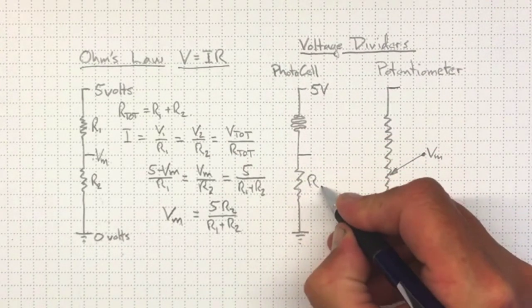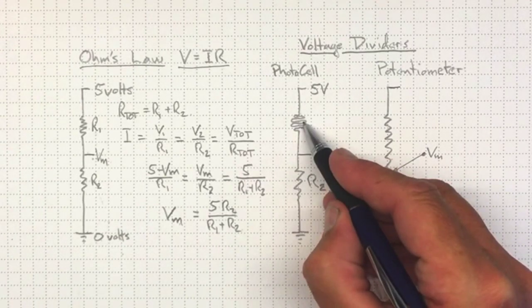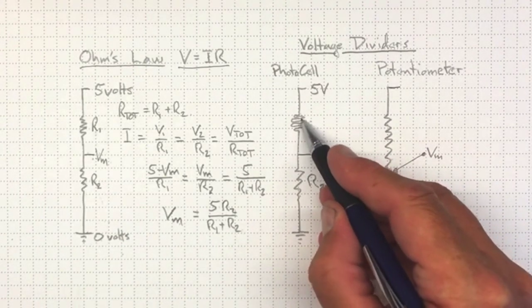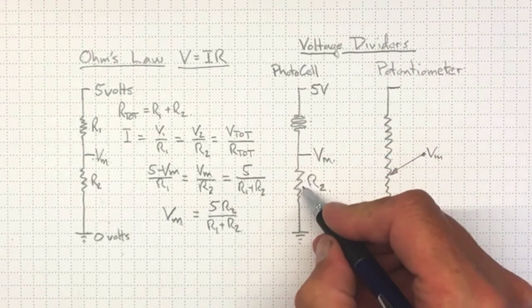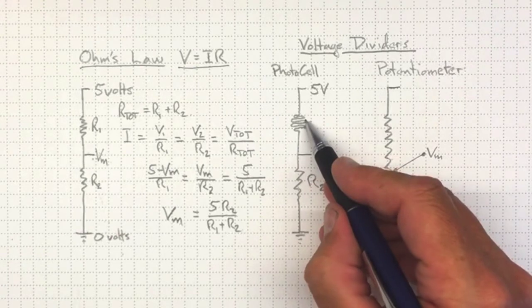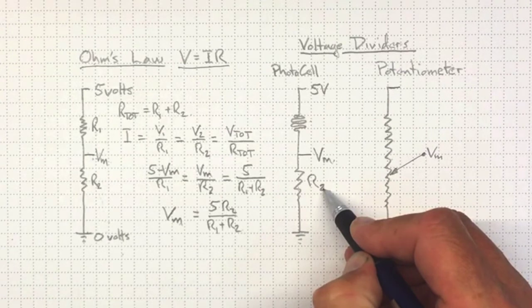If this is some known resistance R2, and this is a cadmium sulfide photocell, then its resistance will vary. And our measured voltage coming out of here will depend on the ratio between the CDS cell, the photocell, and the resistance R2.